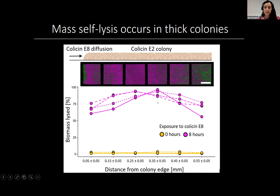With this data I hope I've convinced you that mass cell suicide does indeed happen at the interface between two interacting toxin producers. But the next question was: how can that evolve? It seems really counterintuitive to release a toxin suicidally while being attacked by a competitor. So how can mass cell suicide actually be selected for and evolve?